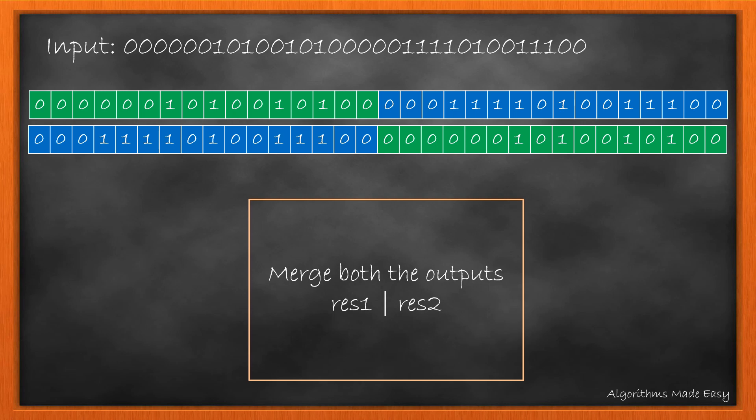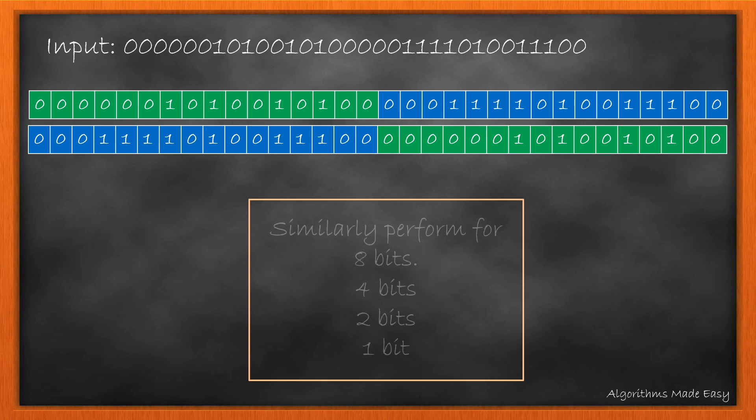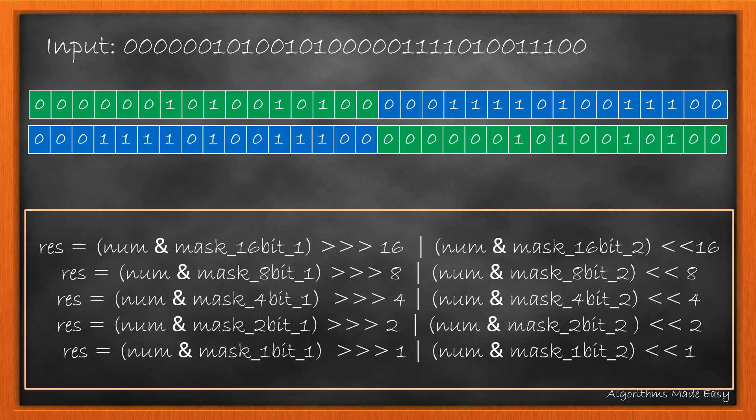We can see that the regions are now swapped. We need to perform the same for the chunks of 8, 4, 2, and 1 bit, wherein the output of the first will be the input for the second. This is how the operations will look like.